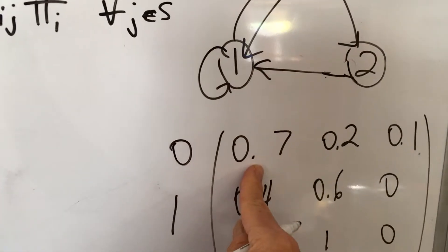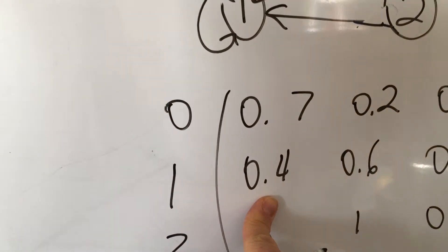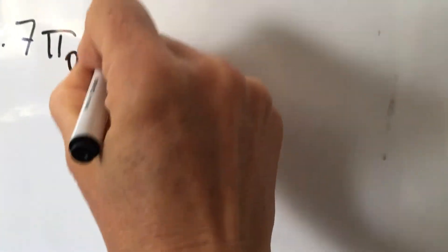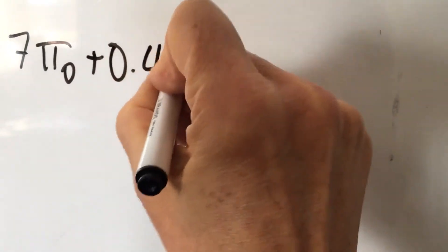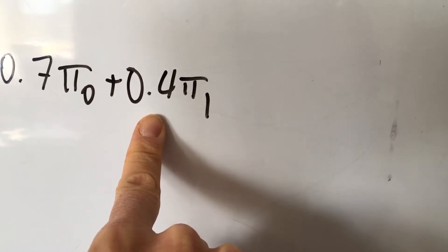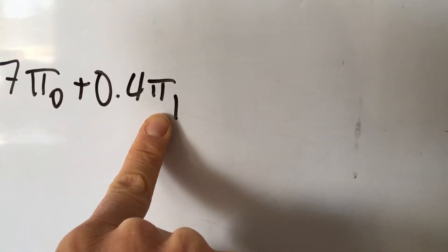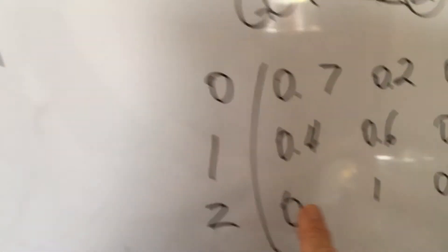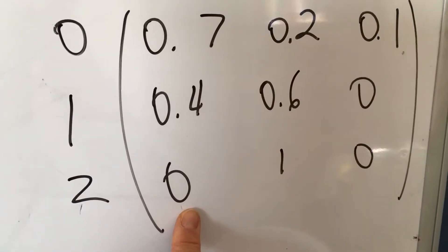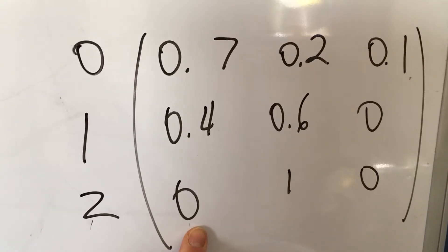Pi of 0, the long-term probability of being in state 0, is going to be 0.7 times pi of 0, plus 0.4 times pi of 1 — which is the single-step transition probability from state 1 to state 0 times the long-run probability of being in state 1. The probability of going from state 2 to 0 in one step is 0, so we leave that off.